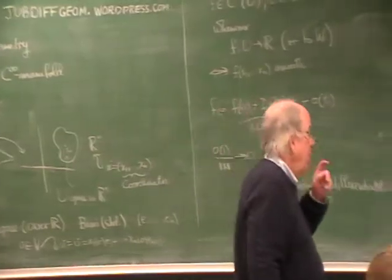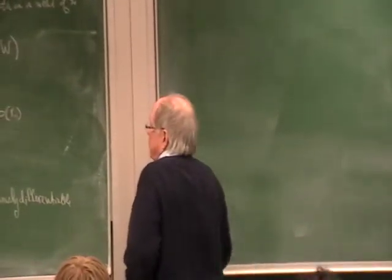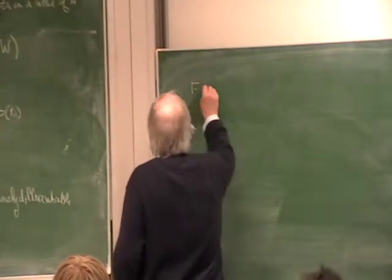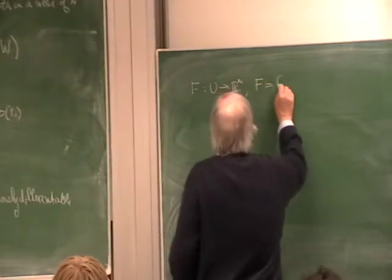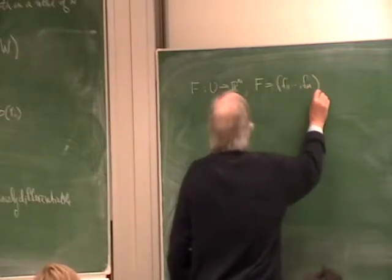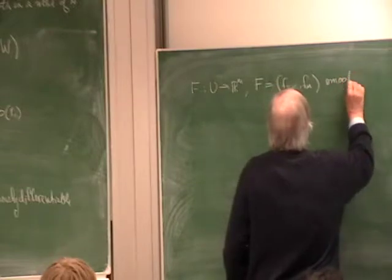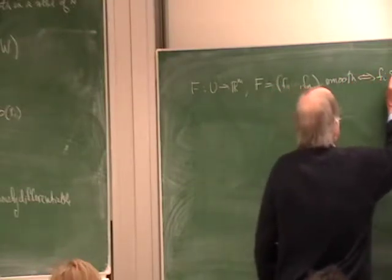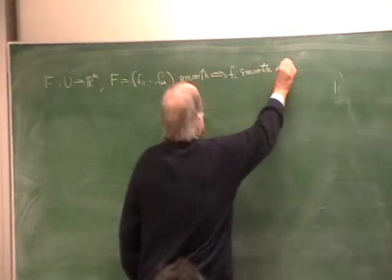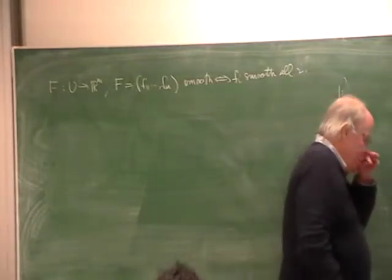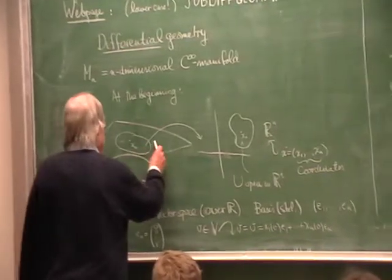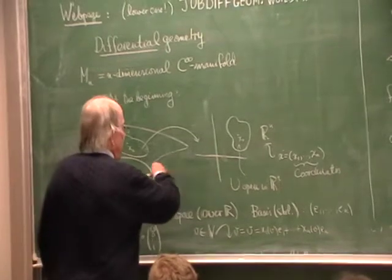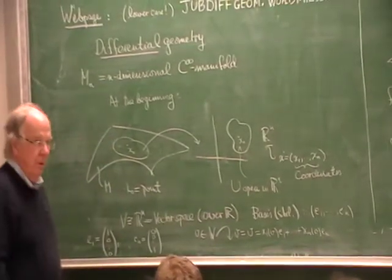We know what a smooth function and smooth map are. F from U to Rᴹ is smooth when all component functions are smooth. This notion is independent of the chart because the change of variables is C∞ — if you say smooth in one chart or smooth in another chart, it doesn't matter.